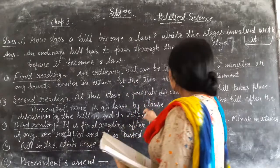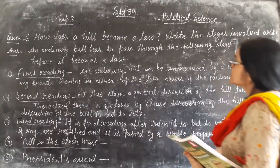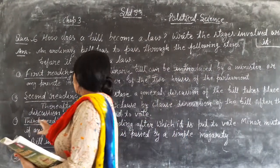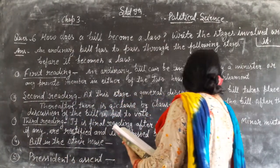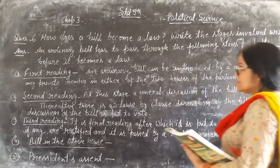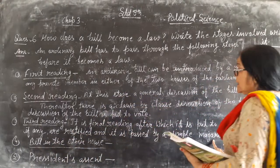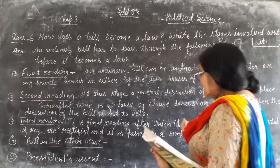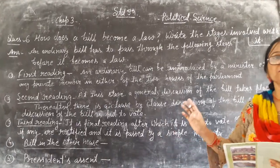Number 3: Third Reading. This is the final stage — the bill is put to vote. Minor mistakes, if any, are rectified. The bill is then passed by a simple majority. If there is a problem, it may be rejected.